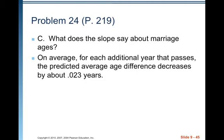What does the slope say about marriage ages? On average, again, you've got to have that little wiggle word there. For each additional year that passes, the predicted average age difference decreases, negative slope, by about, another wiggle word, 0.23 years.